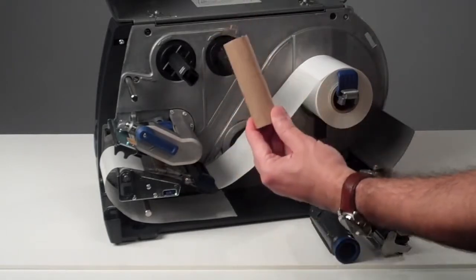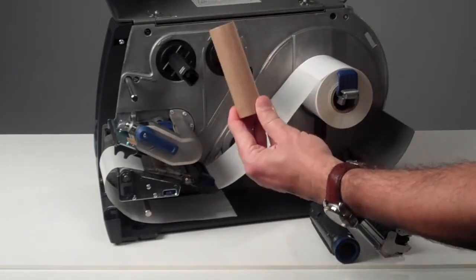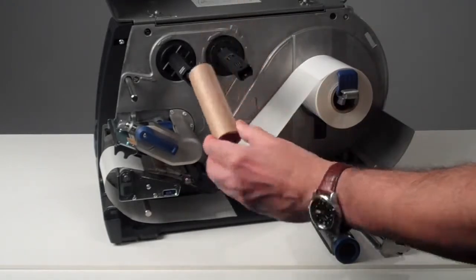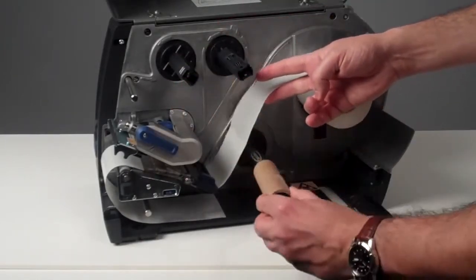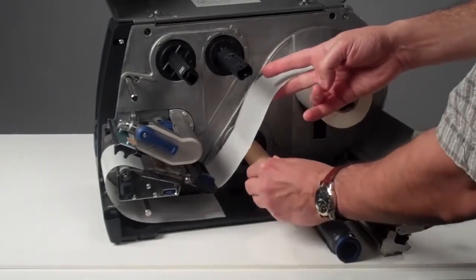The second way is to use the cardboard core. This is basically the same core that you will use for ribbon loading. As the spindles are the same, you can use the same core for rewinding the liner.